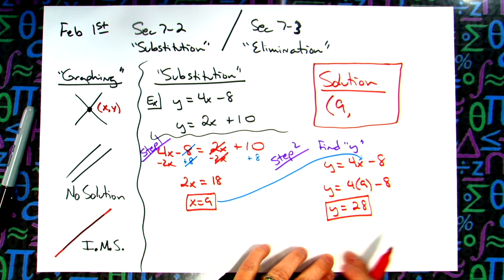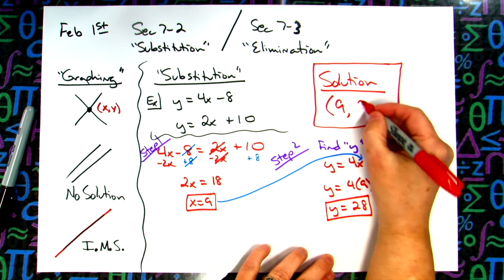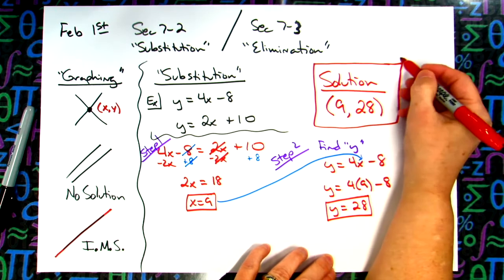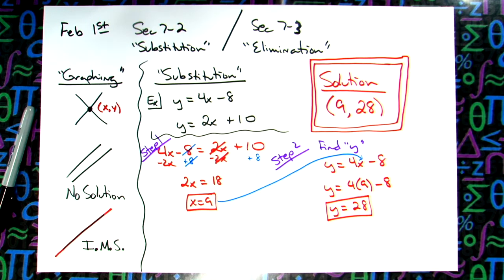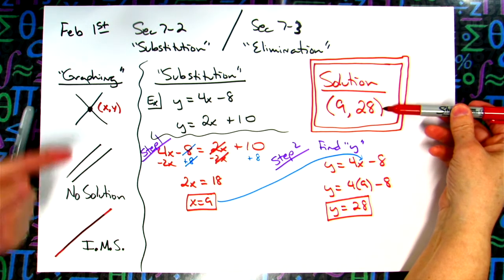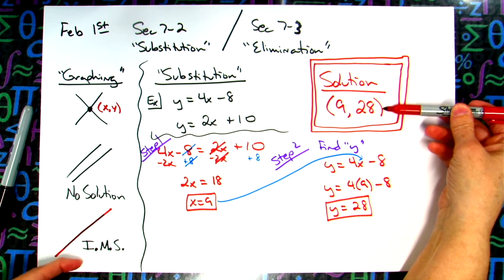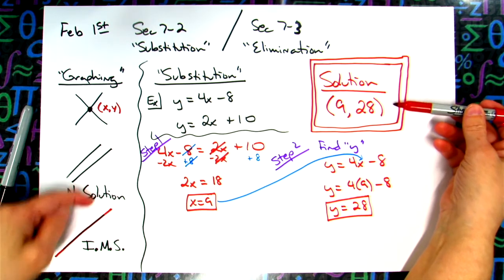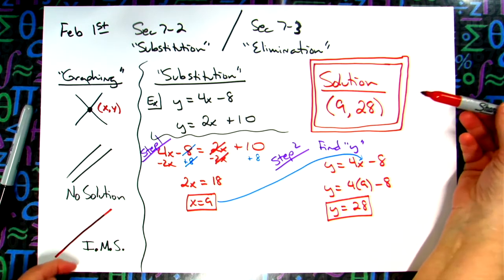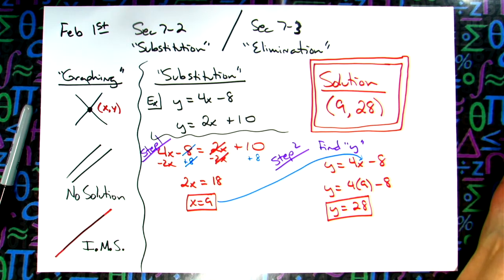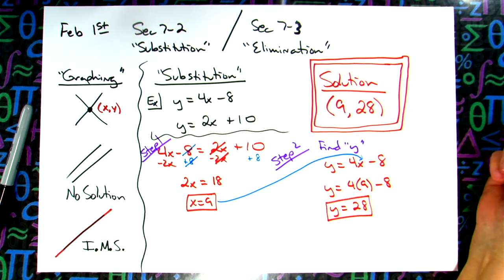So now I know my y value. Since I know my y value I can come back up here, write it as an ordered pair. This is my actual answer. When you solve a system of linear equations, you have got to have the answer either as an ordered pair, or you write no solution, or you write infinitely many solutions, because those are our only three answers.